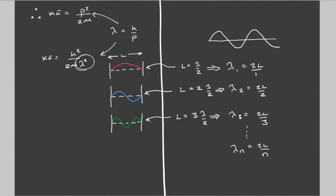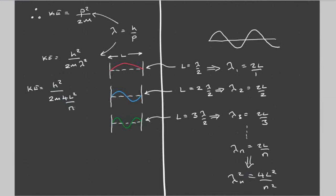Substituting λ_n = 2L/n into the kinetic energy equation: KE = h²/(2m × (2L/n)²) = h²n²/(2m × 4L²). Simplifying, the kinetic energy equals h²/(8mL²) multiplied by n².